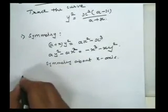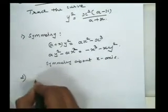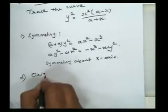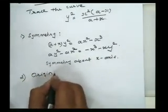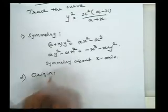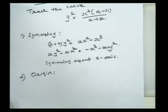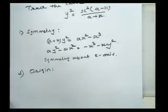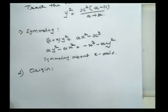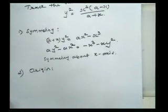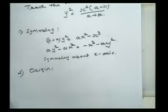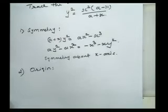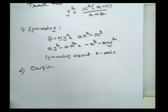The second point is origin. In this equation there is no pure constant term, which means the curve passes through the origin.